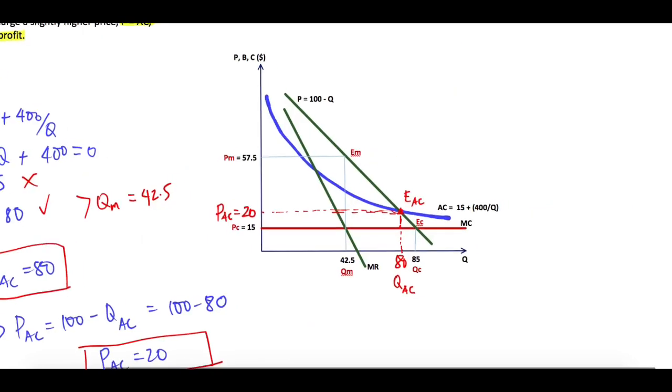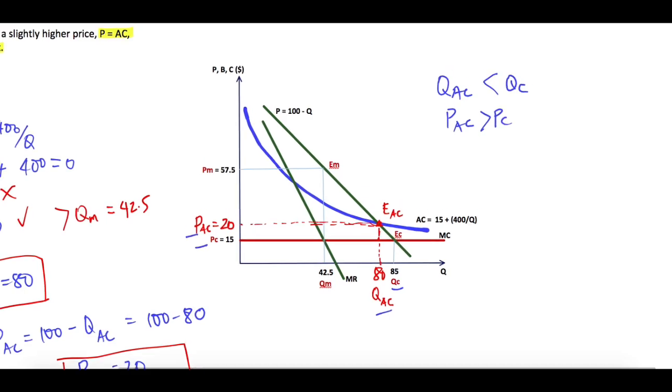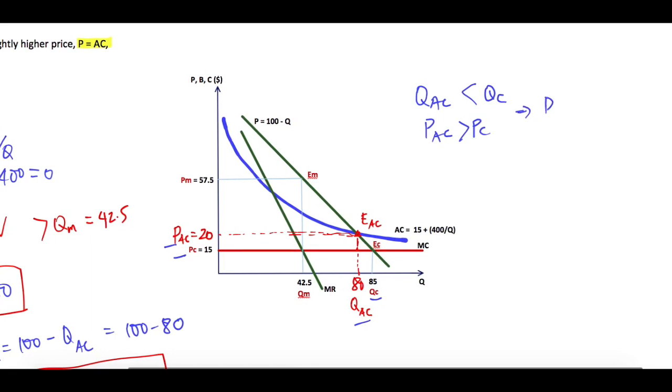And because QAC is lower than QC, you see here, and PAC is higher than PC, so look at here—then there is still deadweight loss.